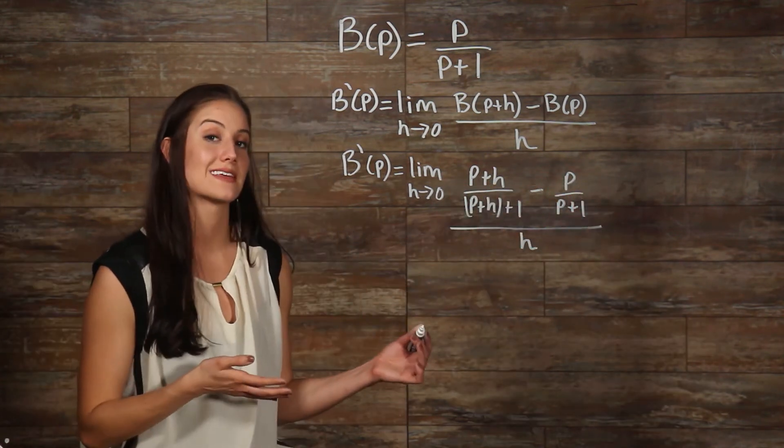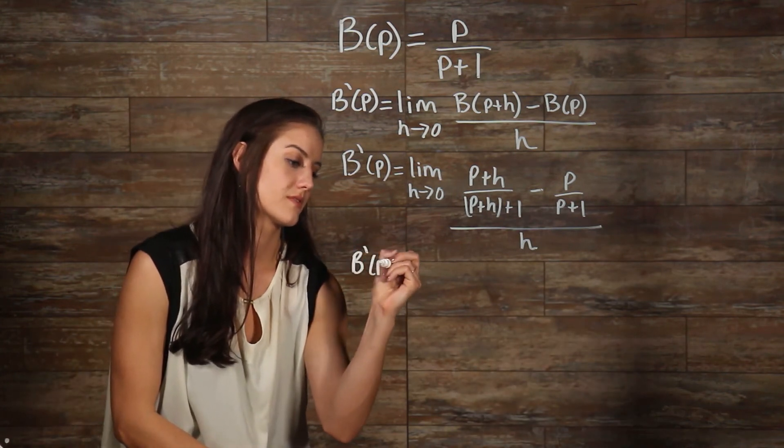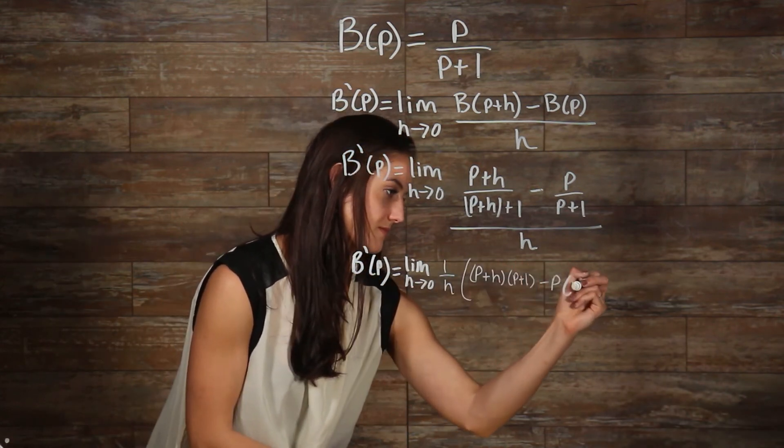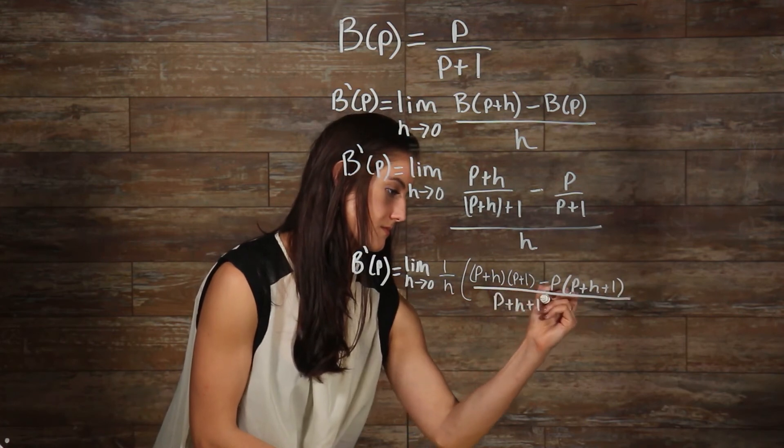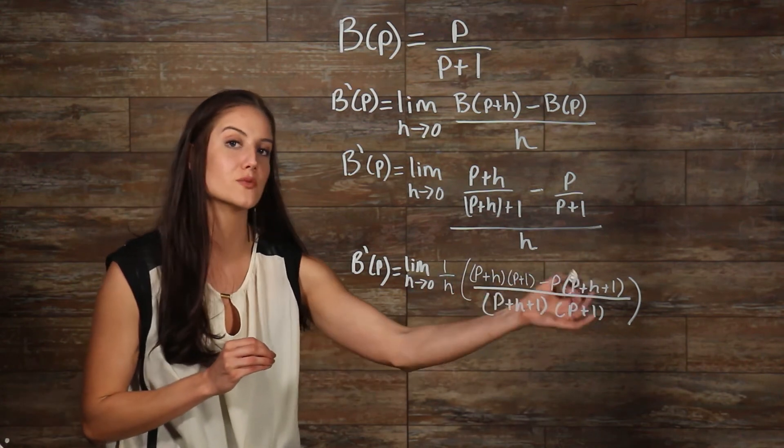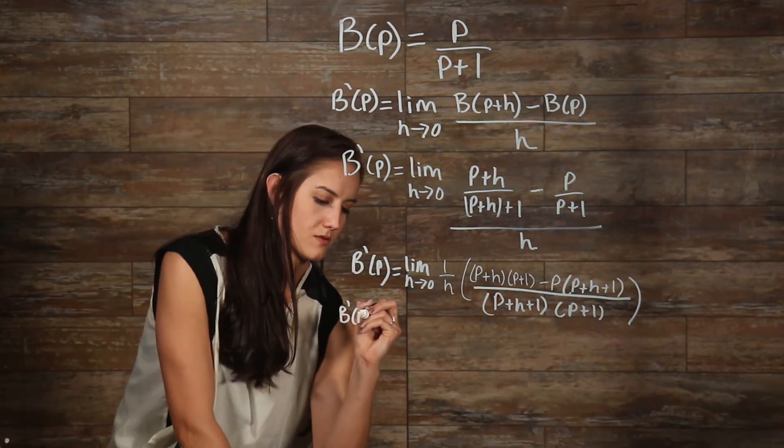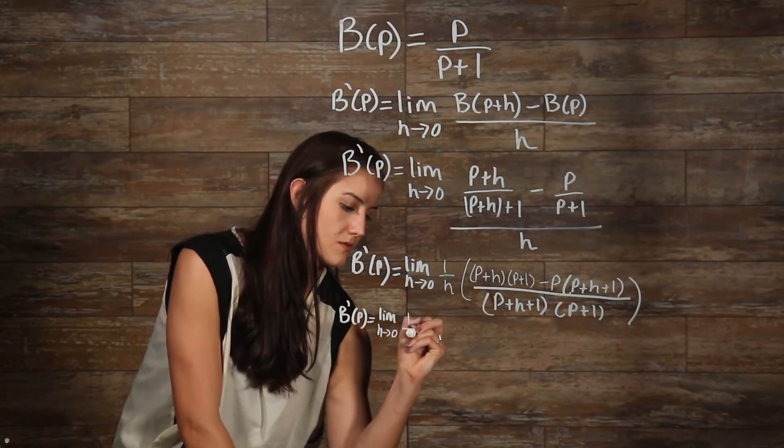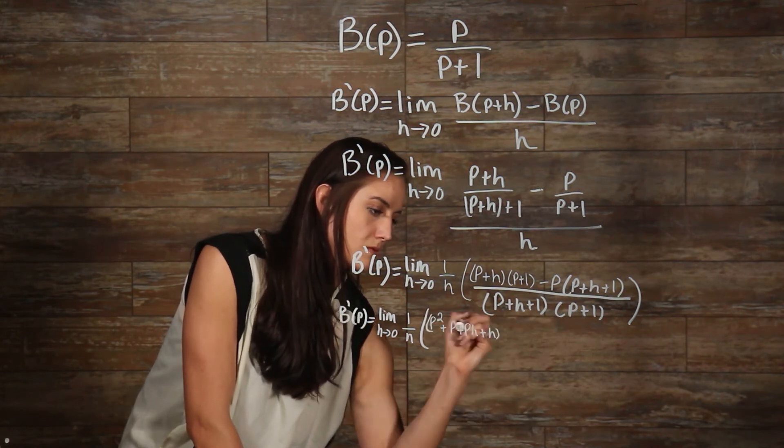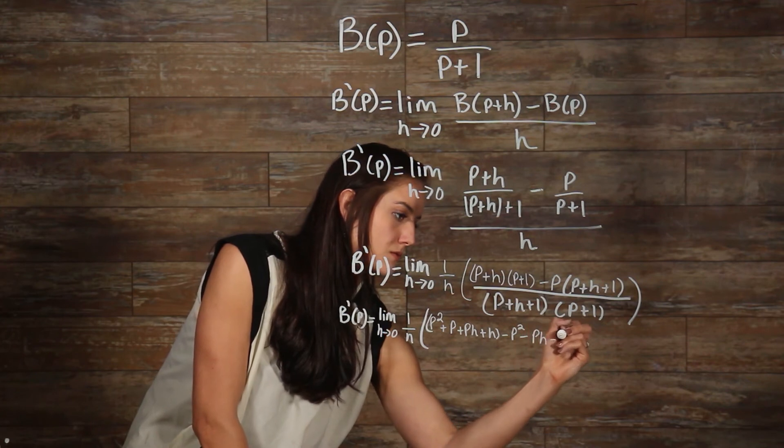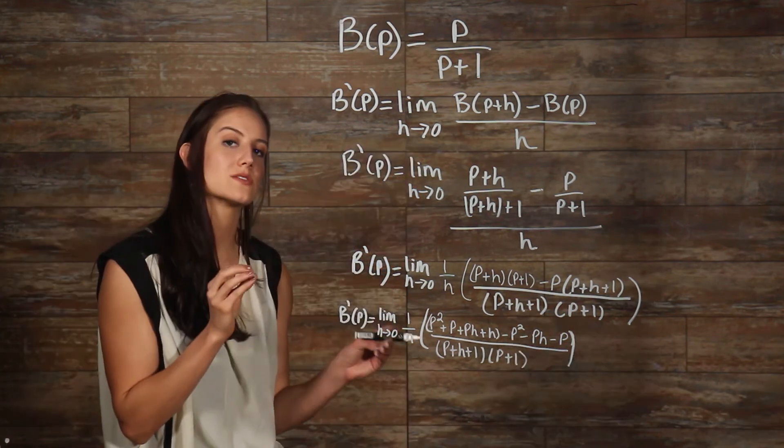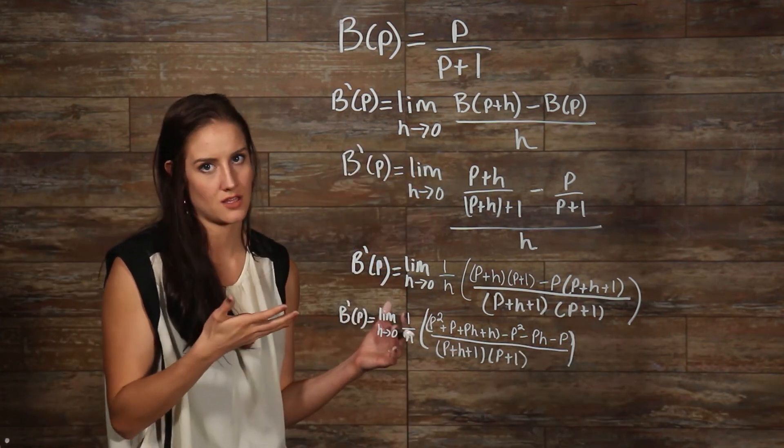Now what we'll do is we'll perform all the operations in our numerator and try and get some terms to cancel. Now we can combine all of our terms, which will then cause a lot of our terms to cancel out here.